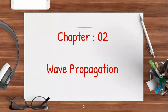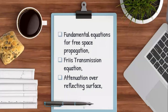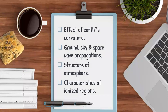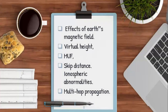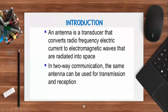Chapter two on wave propagation starts today. The contents listed include: fundamental equations, attenuation, various transmission equations, effect of earth curvature, structure of ionization, skip distance, virtual height, multi-hop propagation, and space link geometry. There are a lot of parameters in this chapter. We will go through them one by one, starting with the introduction.